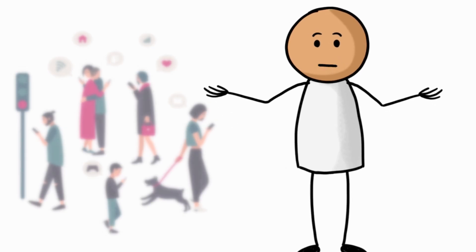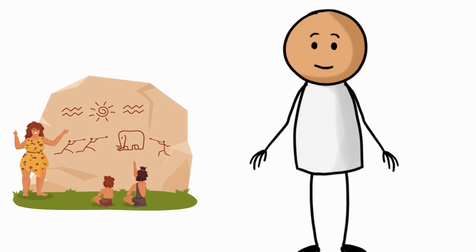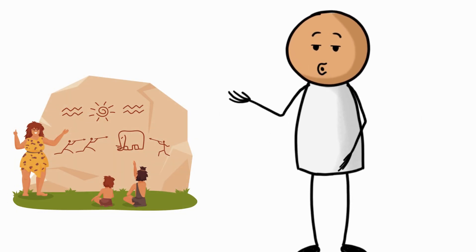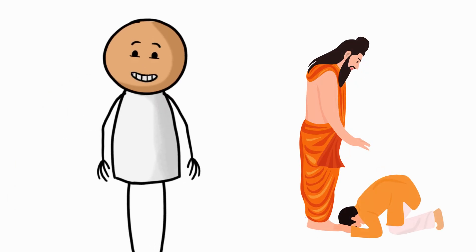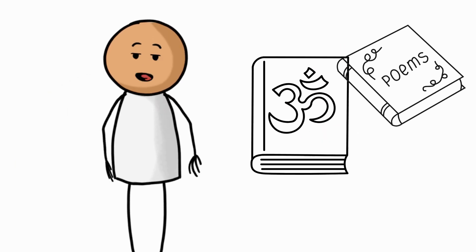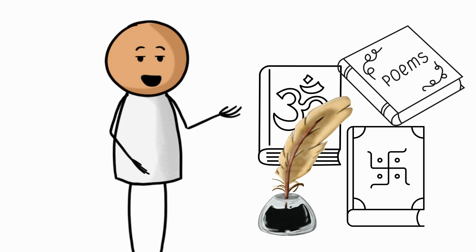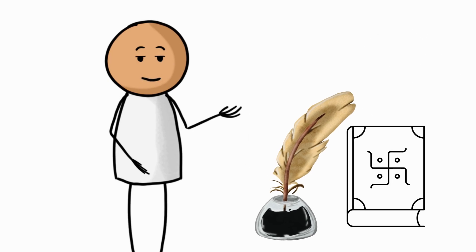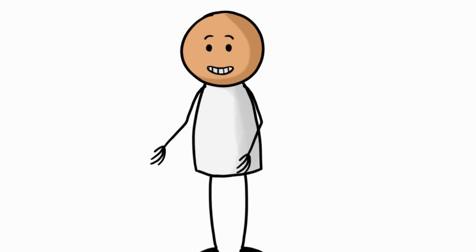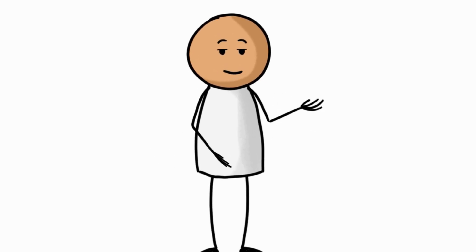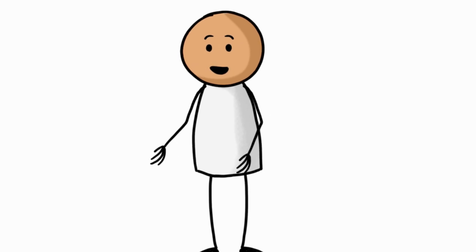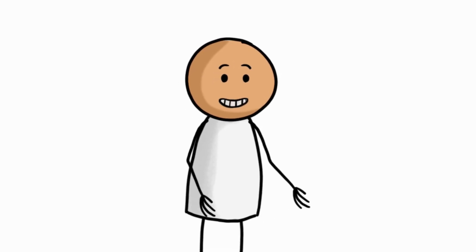But it wasn't always this way. In ancient civilizations, memory wasn't just a tool. It was sacred. Knowledge was passed orally for centuries. Think of the Vedic texts of ancient India or the epic poems of Homer. These were vast volumes of information stored in the minds of individuals who trained their memories to perfection. The idea of forgetting something as basic as a name or a number would have been absurd. But today, we've entered an era where forgetting is normal, even expected. And that should scare us.